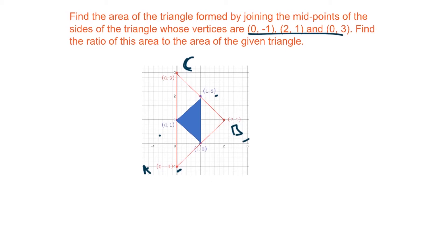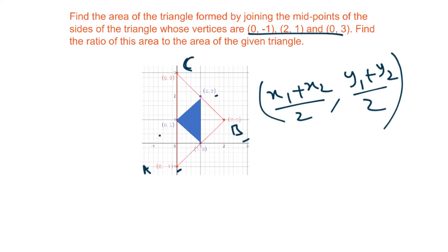We find the midpoints using the midpoint formula: (x1 + x2)/2, (y1 + y2)/2 — just finding the average of the x and y coordinates. For A and B: (0+2)/2 = 1, and (-1+1)/2 = 0. For B and C: (0+2)/2 = 1, and similarly we can find the third midpoint.